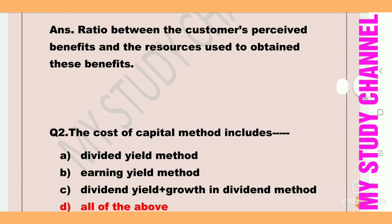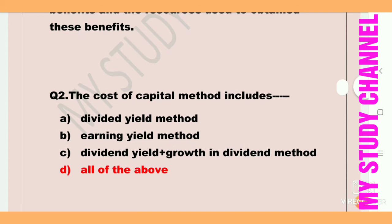Next question: the cost of capital method includes — option A is dividend yield method, B is earning yield method, C is dividend yield plus growth in dividend method, and option D is the right answer — that is all of the above. The cost of capital method includes all components: dividend yield method, earning yield method, and dividend yield plus growth in dividend method.